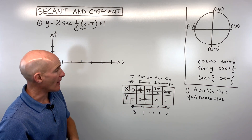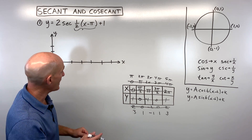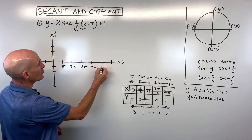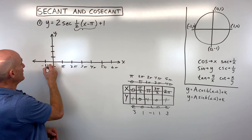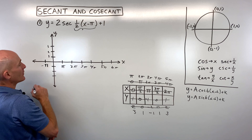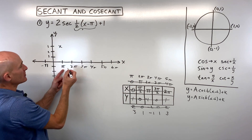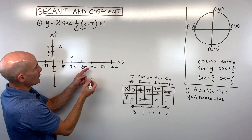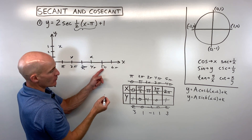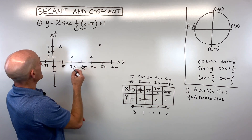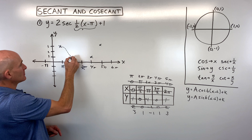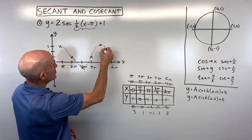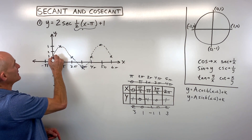Now we have our coordinates for the cosine template graph. Let's plot them — the x-axis counts by π's. We plot: (π, 3), (2π, 1), (3π, −1), (4π, 1), (5π, 3). I'll sketch this cosine graph as a dashed line — it repeats, so it would come back down on the left side as well.